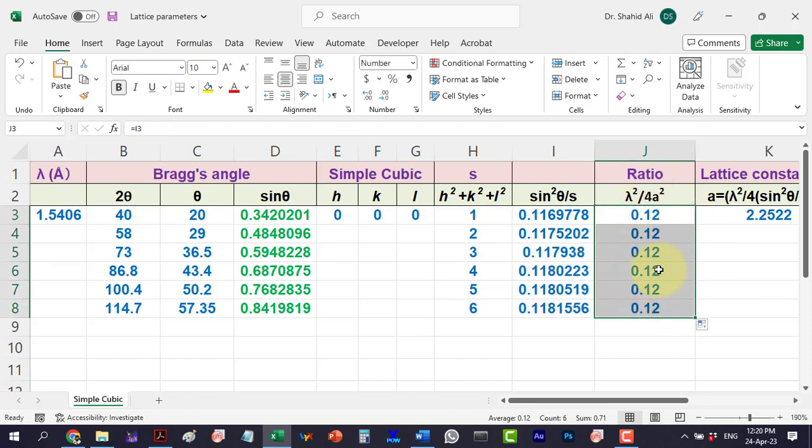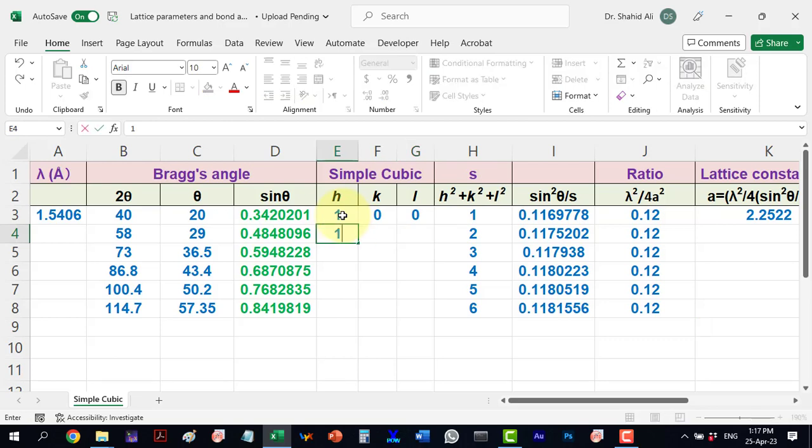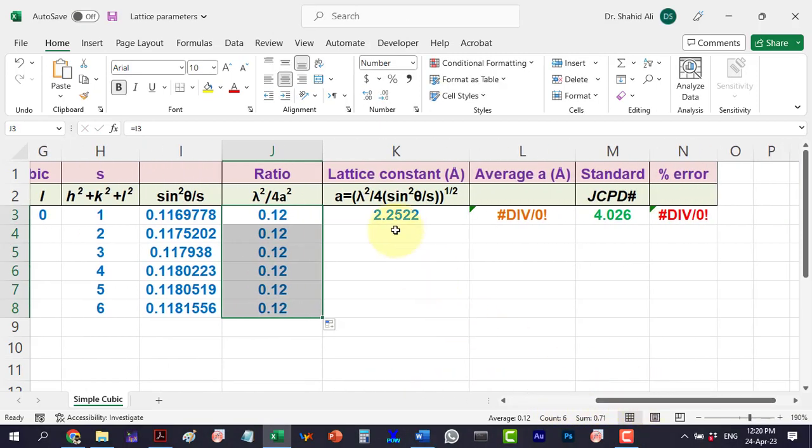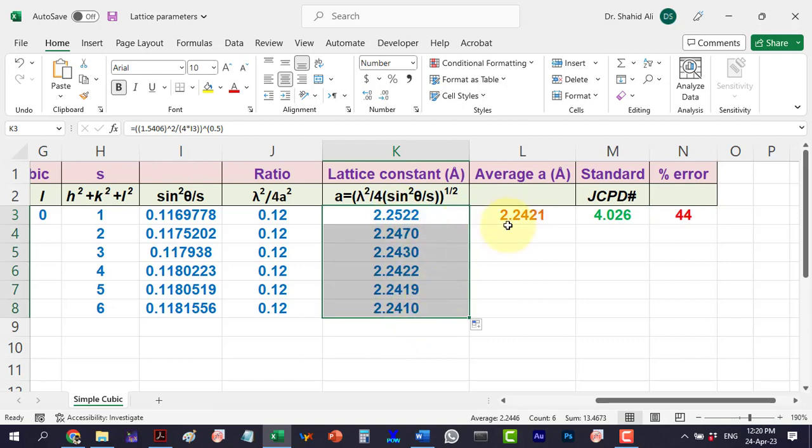This column clearly shows that it is a simple cubic structure. We can now determine the Miller indices. Here the lattice constant comes out to be 2.2421 angstrom. As we don't know the actual value, the afterward columns are irrelevant.